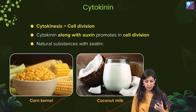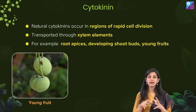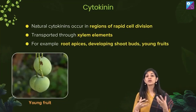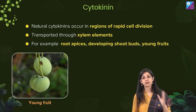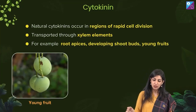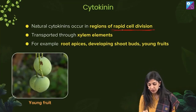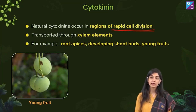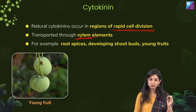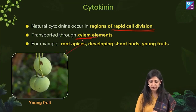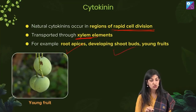Naturally, it was found that wherever active growth is happening in a plant, cytokinins will be present. In regions of rapid cell division, we can isolate cytokinins. They are transported through the xylem, and the places to extract them are root apices, developing shoot buds, and young fruits.